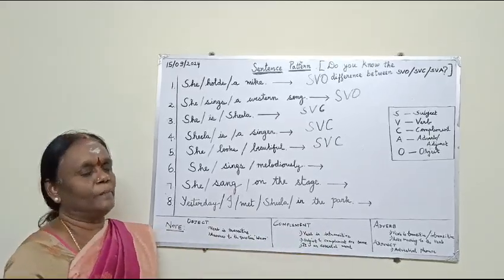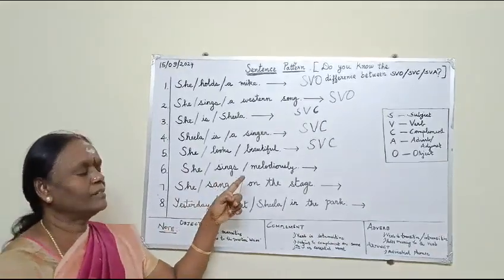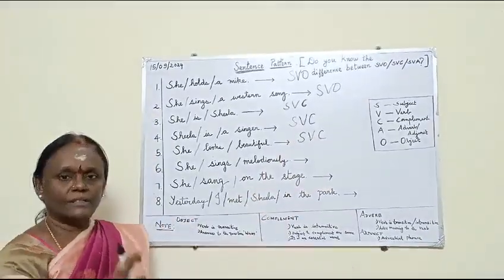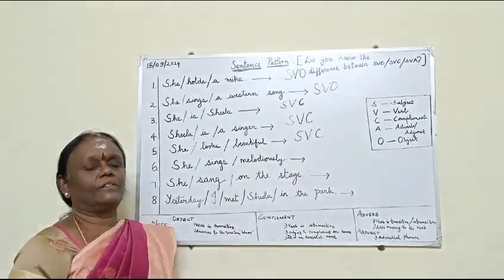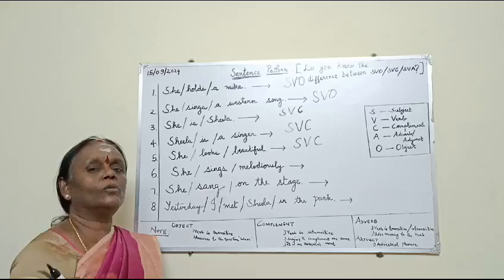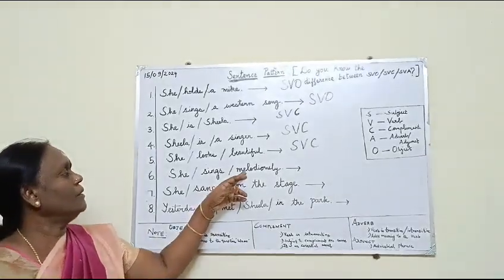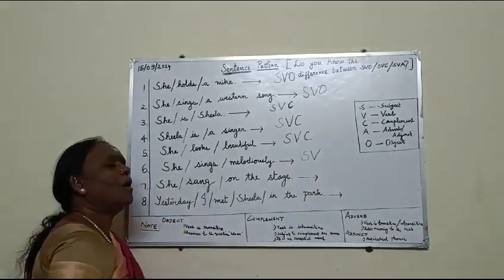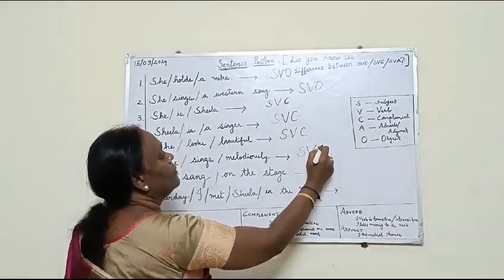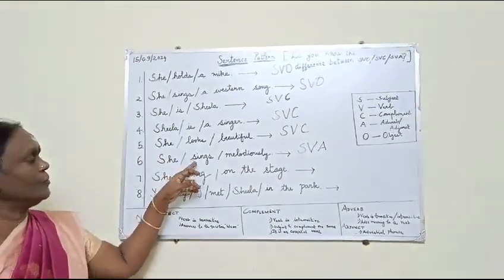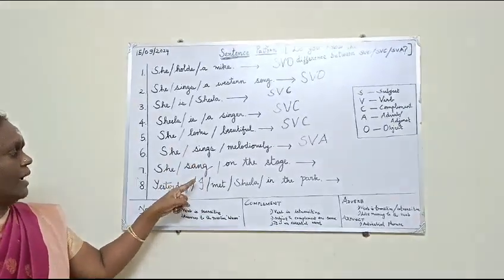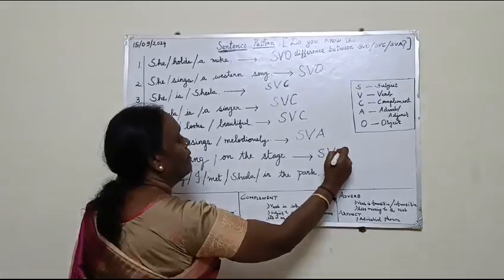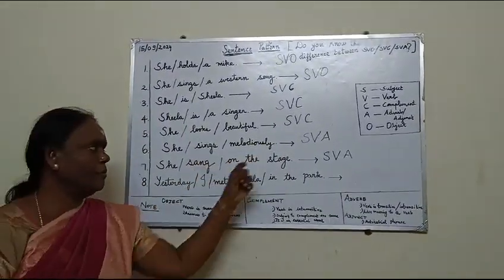Let us go to the third sentence pattern. Sentences 6, 7, and 8 take an adverb. Not only an adverb — I have given you an adjunct. An adjunct is nothing but an adverbial phrase. Adverbs tell you about time, place, and manner. In the sixth sentence: she sings — how does she sing? Melodiously. This is an adverb; it tells you the manner of her singing and gives extra information about the verb. So we write S, V, A. One word is an adverb; a phrase is an adjunct.